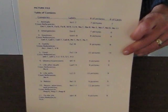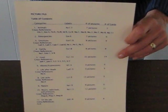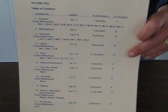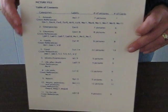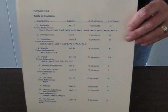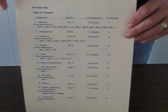This is the table of contents. There are various categories listed: animals, emergencies, emotions, family, food, idioms and expressions, nature, nouns, pronouns, adjectives, life after death, life skills, on the job, senses, and prepositions. Under each category, if there is another file that I want to bring from another category that's applicable, there will be a cross-reference.